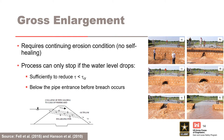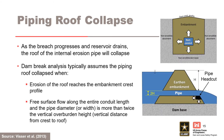Gross enlargement of a pipe or leak requires a continuing erosion condition where there is no self-healing. The process can only stop if the water level drops below the inlet of the developing pipe before the breach occurs, or the water level drops sufficiently to reduce the hydraulic shear stress below the critical value. The photographs on the right are from ARS field testing. As breach progresses and the reservoir drains, the roof of the internal erosion pipe will collapse. Dam break analysis typically assumes the piping roof collapses when erosion of the roof reaches the embankment crest profile, or when free surface flow exists along the entire conduit length and the pipe diameter or width is more than twice the vertical overburden height — the vertical distance from the crest to the roof. This is illustrated by the figure on the lower right from the Windamp C software documentation.